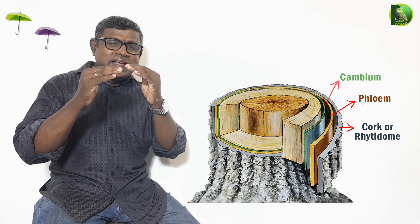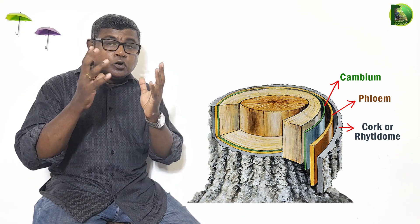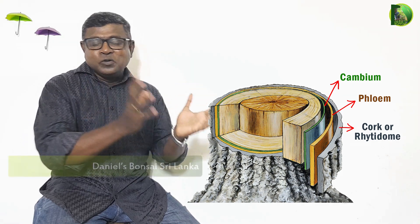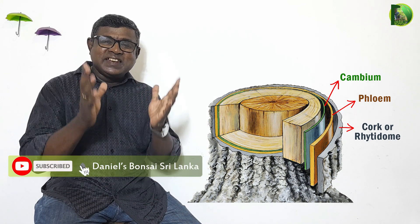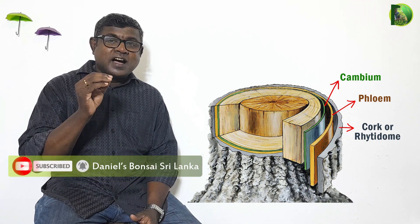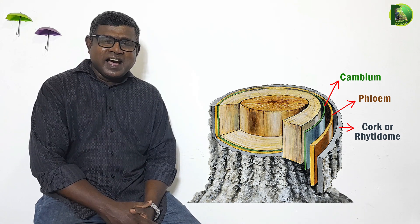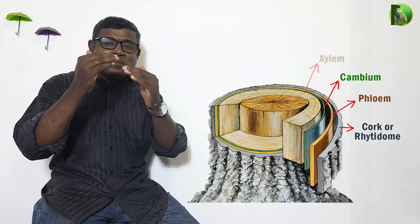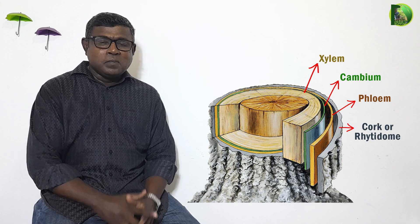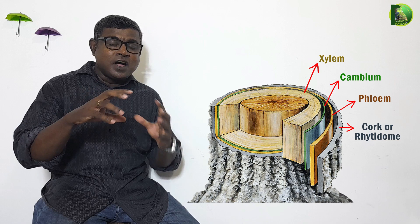The floam layer is a cambium layer. The floam layer is a growing layer. It is a growing layer. Therefore, you can create a cambium layer. It is a small part of the floam layer. It is a big part of the floam layer.